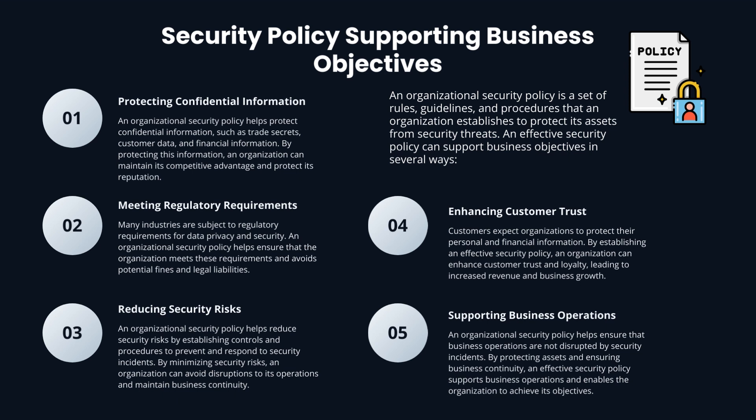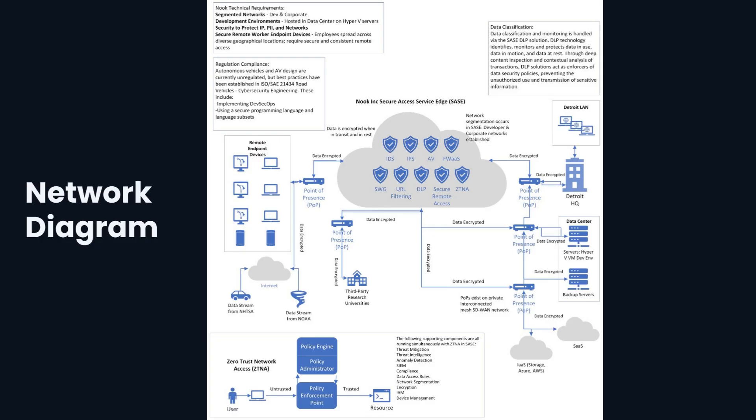And finally, step five, supporting business operations: an organizational security policy helps ensure that business operations are not disrupted by security incidents. This slide represents the network diagram for Nook Incorporated, featuring their Secure Access Service Edge (SASE). The diagram also highlights the Zero Trust Network Access and shows that process, which is also part of the SASE of Nook Incorporated.